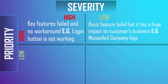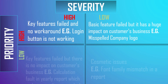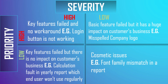Low severity and high priority: a basic feature has failed but has a huge impact on the customer's business. For example, there is a spelling mistake in the company logo on the home page. High severity and low priority: a key function has failed but it has no impact on the customer's business. For example, a calculation fault in an annual report that is not used regularly by the end user.